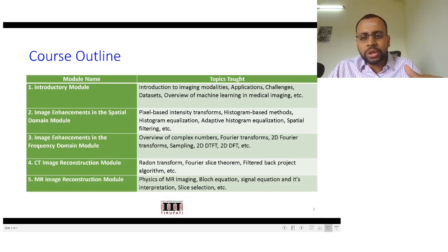When we are going to the next two modules, CT image reconstruction and MR image reconstruction. In case of CT image reconstruction, we would be talking about in particular Radon transform, Fourier slice theorem, filtered back projection algorithm. And in MR image reconstruction, we would start with the physics of this MR imaging, the Bloch equations, then signal equation and its interpretation, followed by the slice selection procedures. So this is roughly the outline of this course.